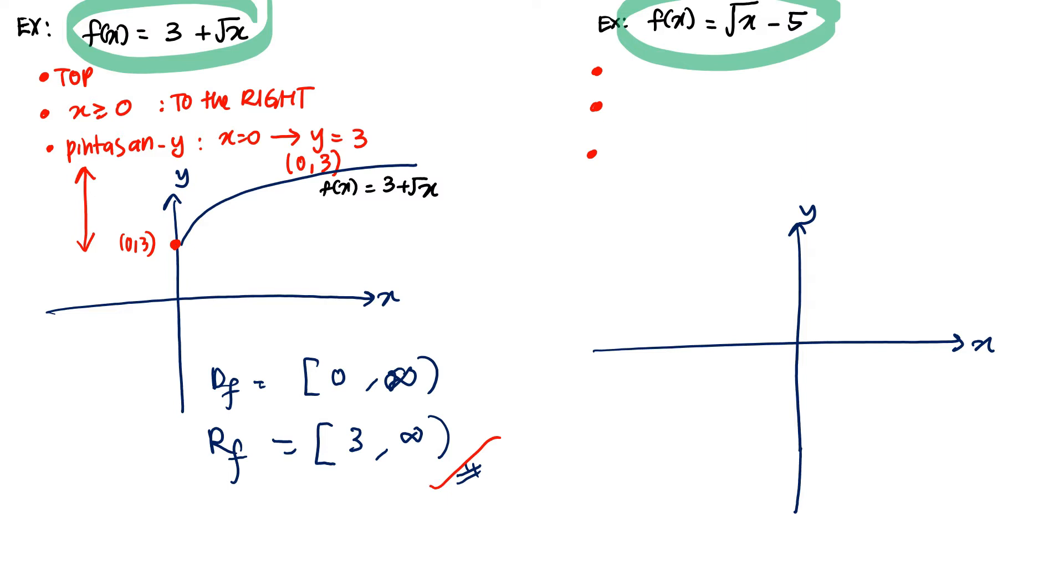What is your first identification here? Top. It must be on the top. And then it will start with x equal to zero. Then we will find the y-intercept. When x equals zero, y equals negative five. So where is the point? At the bottom. Here is negative five.